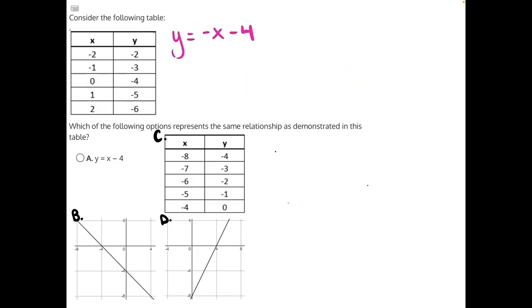Now that we have our equation, let's take a look at some of our answer choices. For answer choice A, what we need to do is compare our two equations, and A is almost correct, but we're missing that negative 1 as our slope in front of x. So A is incorrect.